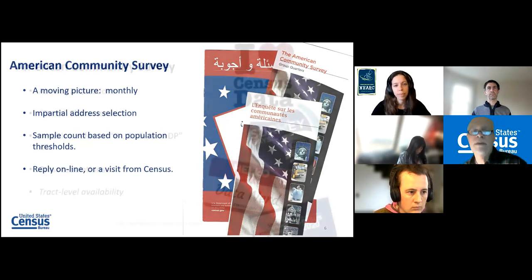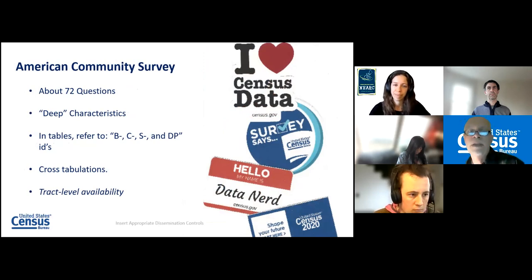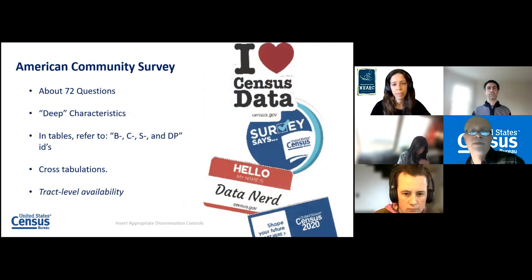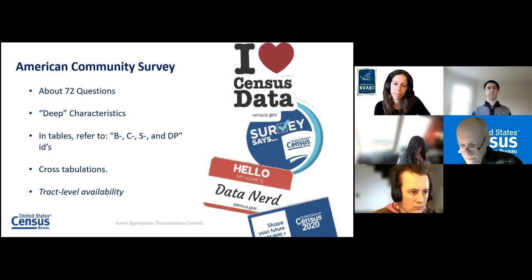We administer the ACS to one percent of the population a year. People can reply online or on a paper form, but if they don't, they get a visit the following month from one of our workers. We ask 72 questions covering deep characteristics. We do ask names on the form in case we need to call back, but once the data is collected we destroy those names. We have all sorts of tables: B for base, C for collapsed, S for subject, and DP for data profile. We also do cross-tabulations of multiple questions into combined tables.